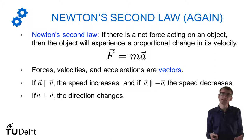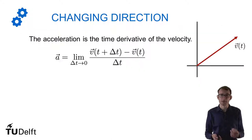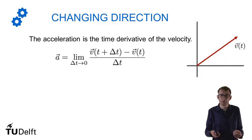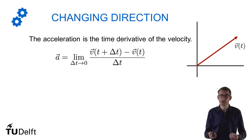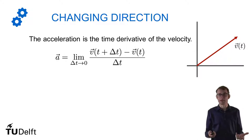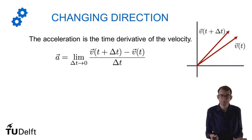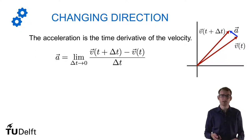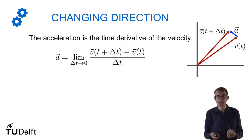That's not actually that complicated because acceleration is simply the derivative of the velocity. The derivative of a vector works just like the derivative of a function — it simply tells you how you change over time. Suppose the velocity is given by this vector at some point in time, and a little time later it has changed to this vector. The acceleration is simply the displacement between the ends of these vectors. For this change in velocity where the magnitude has stayed the same but the direction has changed, the acceleration is pointing from one end to the other end.